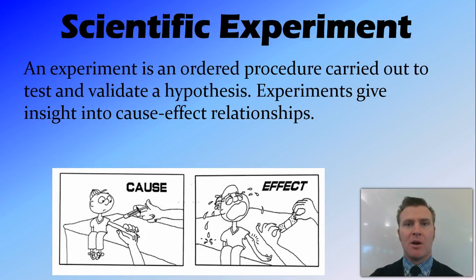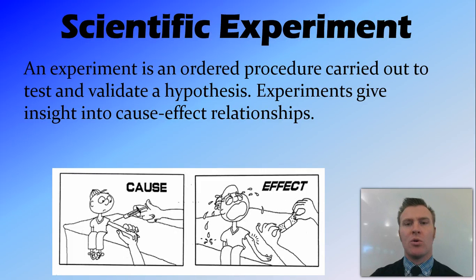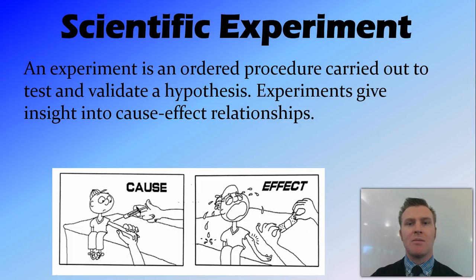So firstly, what an experiment is. When we use the word experiment in science, an experiment is an ordered procedure carried out to test and validate a hypothesis, and it gives us insight into cause and effect relationships. Basically, with an experiment we have a formal procedure or method to prove that one thing affects another thing or causes an effect in another thing.